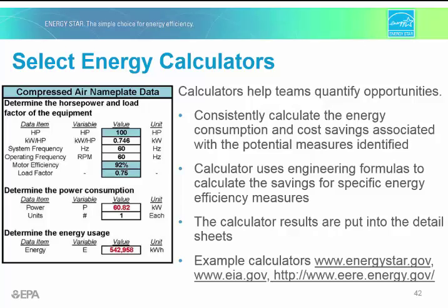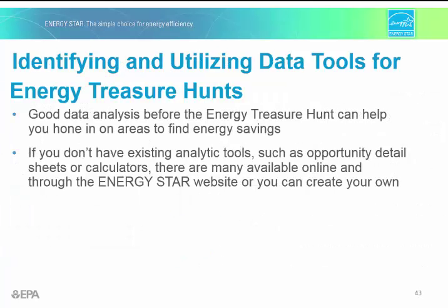The final step in the preparation phase is to select or develop energy calculators. You may have knowledgeable engineers who come equipped with their calculation methodologies, or you may want to refer to the example calculators available on the Energy Star website. Calculators are important because they provide consistent calculation of energy consumption and cost savings, and these results can be plugged into the detail sheet, or in some cases the calculations may be embedded in the detail sheets. The example on screen is also from Toyota — to develop it they followed the Association of Energy Engineers CEM, or Certified Energy Manager Handbook. If you don't have existing tools, there are many available online and through the Energy Star website.